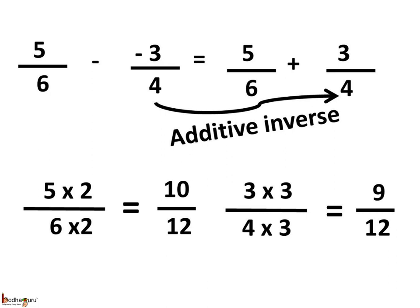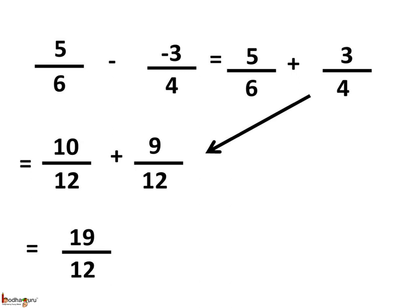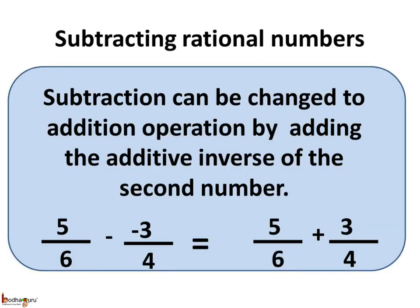For the rational number 3/4, we multiply both the numerator and the denominator by 3. 3 multiplied by 3 is 9, and 4 multiplied by 3 is 12, so we get 9/12. Then 10 plus 9 is equal to 19. So 10/12 plus 9/12 is equal to 19/12.